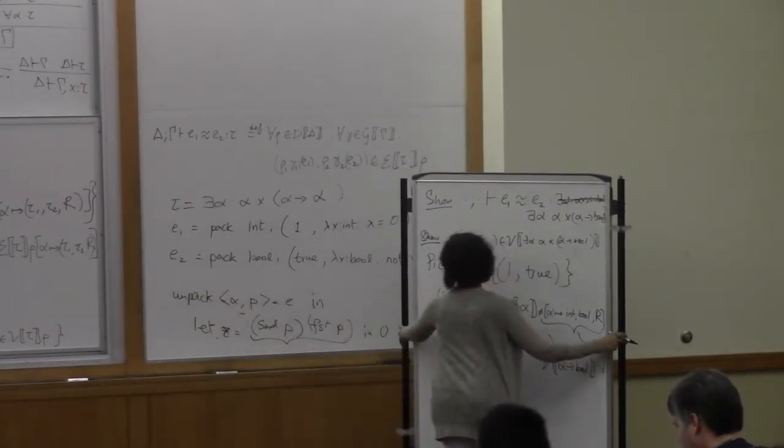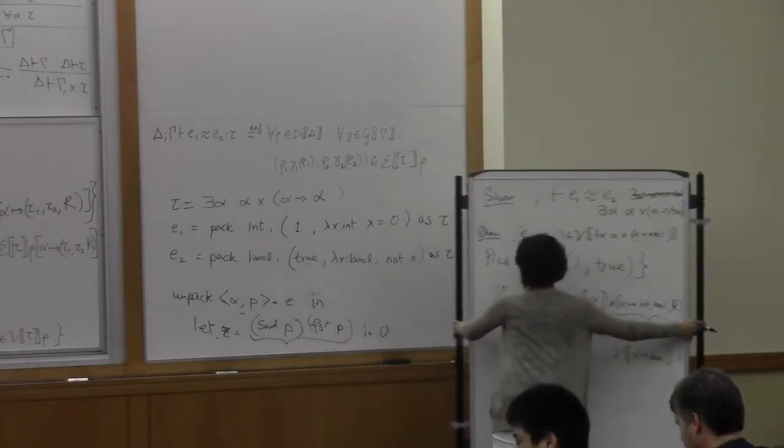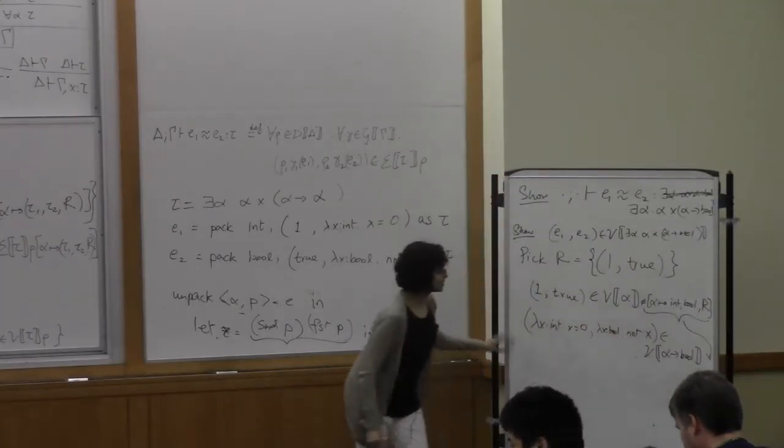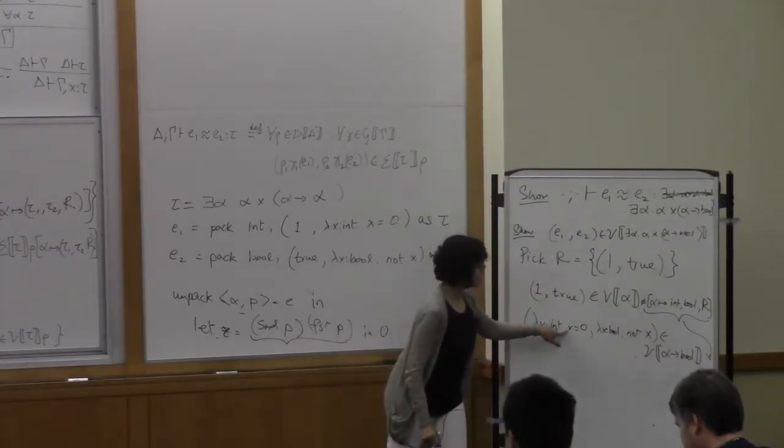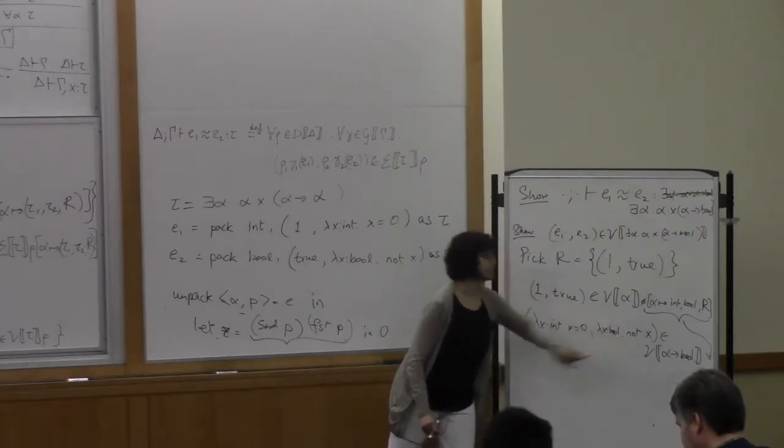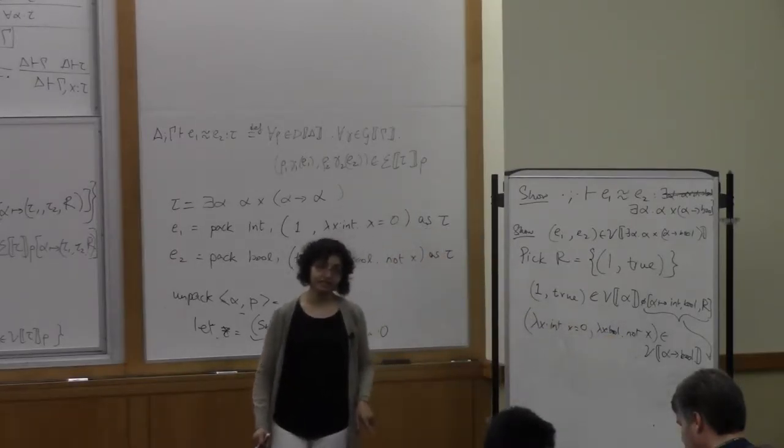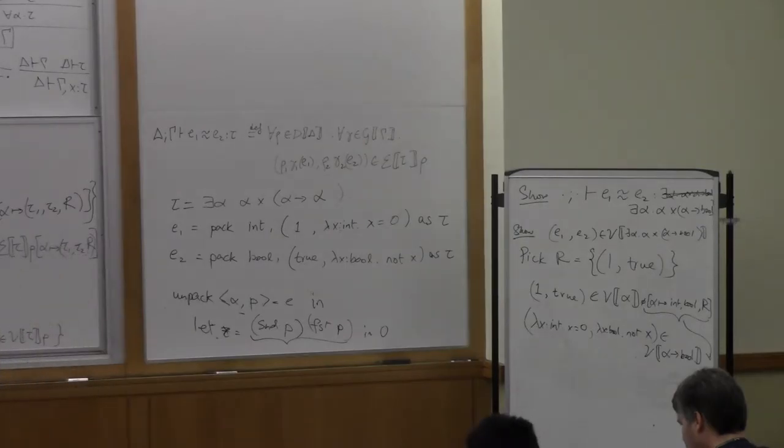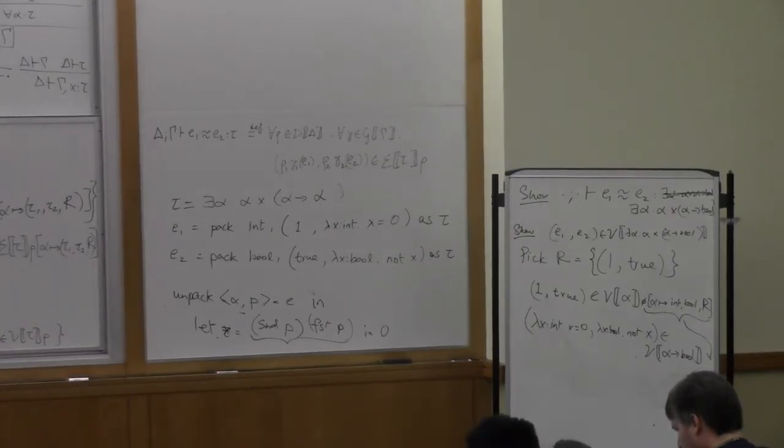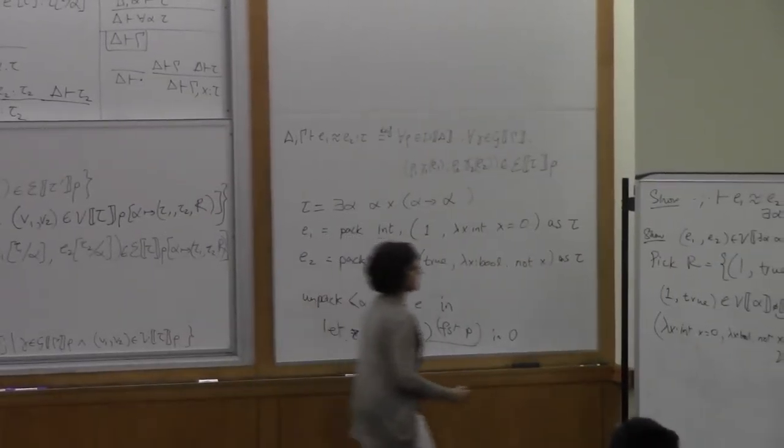Let me find a good placement for this. Here we go. So now we need to show that the function lambda x, x equals 0 is related to the function lambda x, not x. How do we show the two functions are related? Well, the function definition says, give me two things that are related to the argument type.